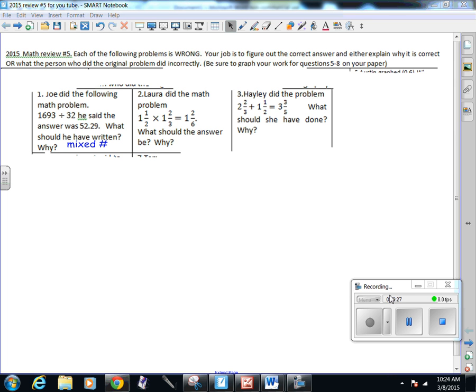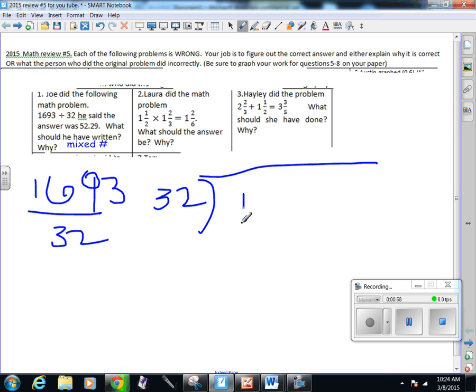The first question says Joe did the following math problem: 1693 divided by 32, and he said the answer was 52.29. What should he have written? So I'm going to look at the math problem and then I'm gonna write it down. Sometimes I get confused about what goes where, so if I write it as a fraction and I know all fractions mean divide, I write the denominator outside. I'm good to go.